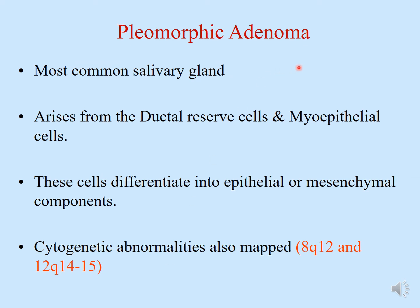Pleomorphic adenoma is the most common salivary gland tumor — the most common benign salivary gland tumor — occurring in any age, in children as well as adults. It arises from the ductal reserve cells and the myoepithelial cells of the salivary glands. These cells differentiate into epithelial or mesenchymal components. 'Pleomorphic' means many morphological appearances, and 'adenoma' refers to any glandular tumor.